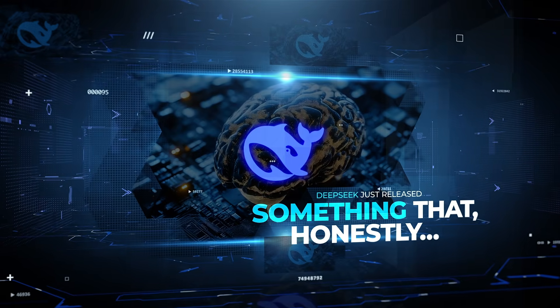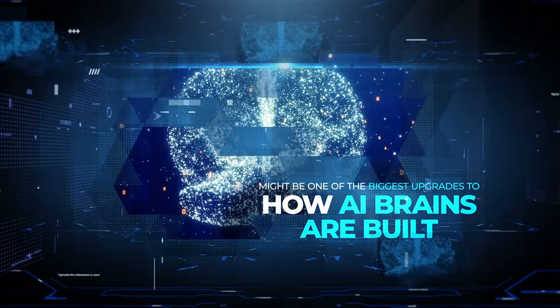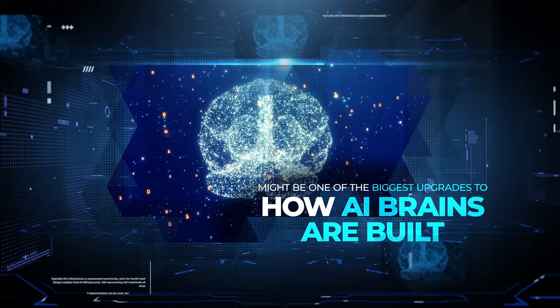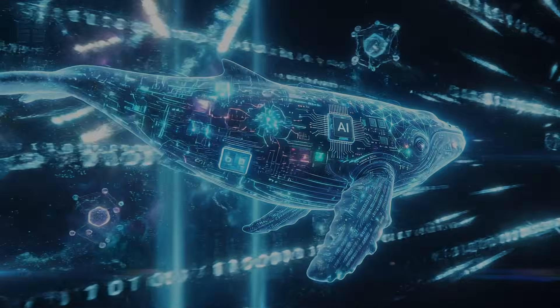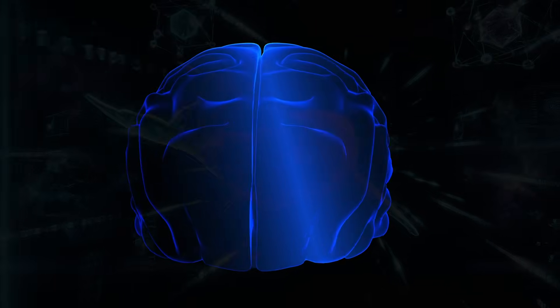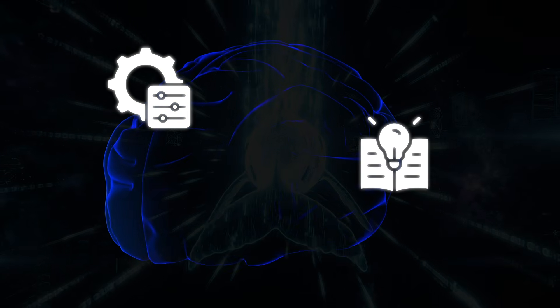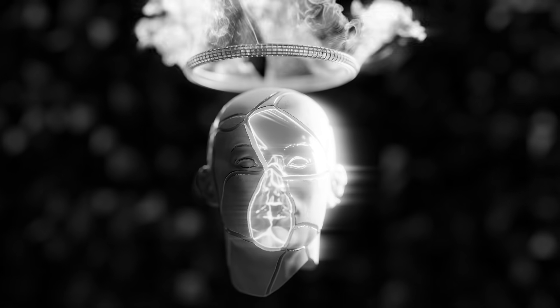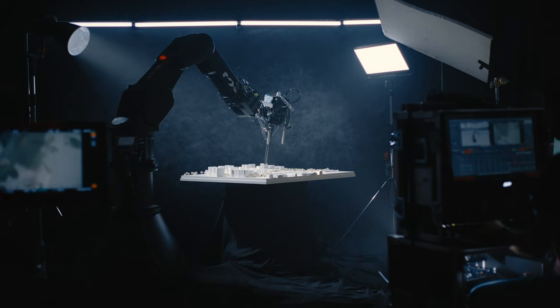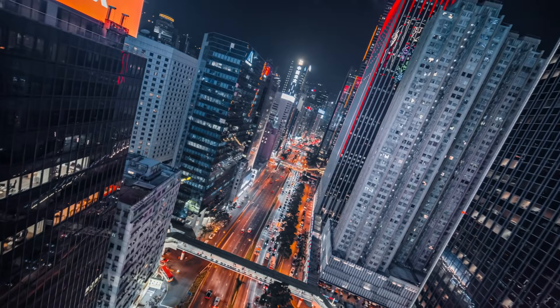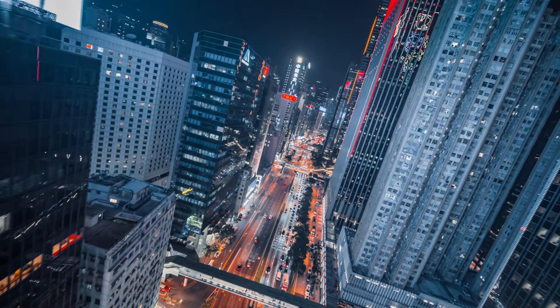So, DeepSeek just released something that might be one of the biggest upgrades to how AI brains are built. Because for years now, the main strategy has basically been, if you want a smarter AI, you make it bigger. More parameters, more training data, more compute. And it worked. But then we hit a wall. These models started getting so huge that running them became insanely expensive. It's like trying to power a whole city just to answer a question.